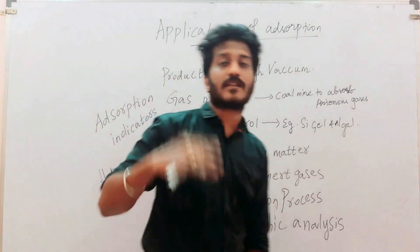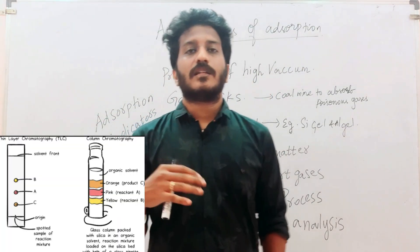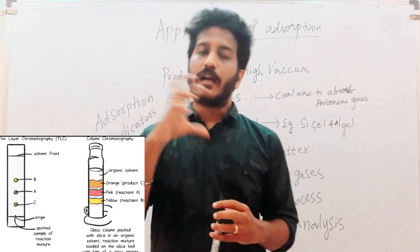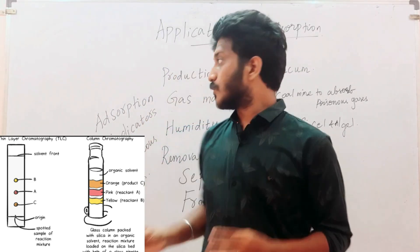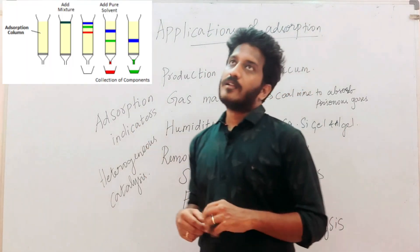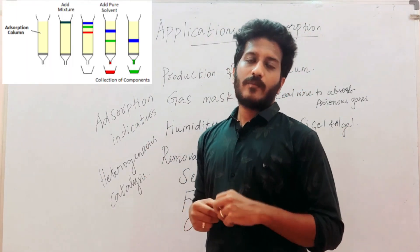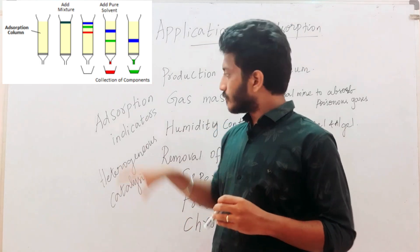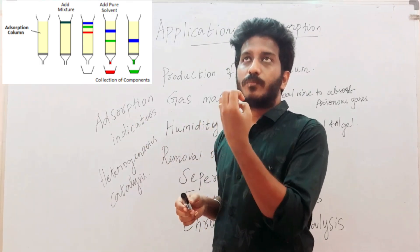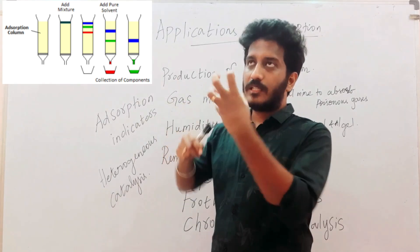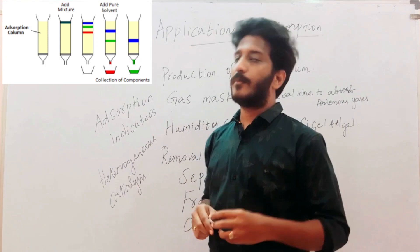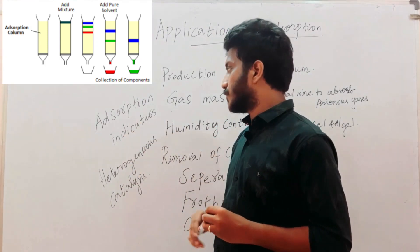Chromatographic analysis is also an application of adsorption, used for the separation of various compounds — including drug analysis and food analysis. Additionally, adsorption indicators such as eosin dye or other dye preparations are used for color adsorption. The adsorbent changes color at the endpoint, and that is used as the adsorption indicator.